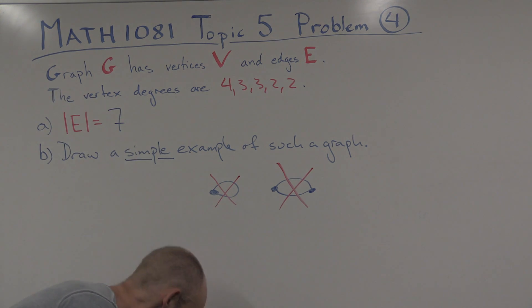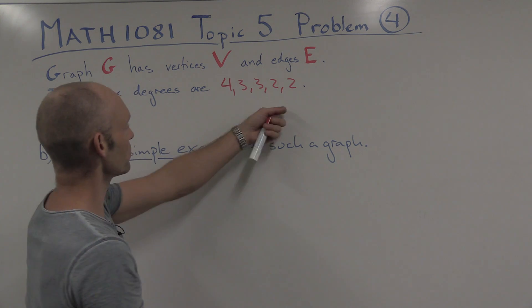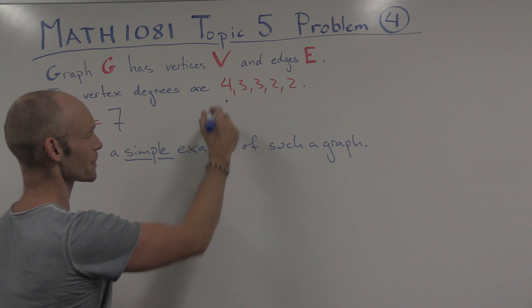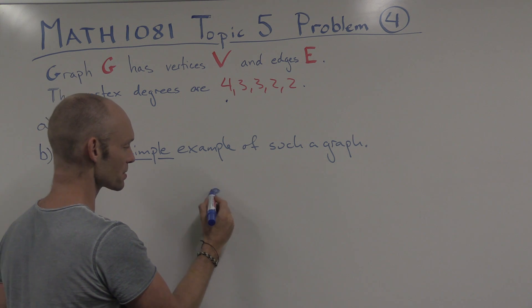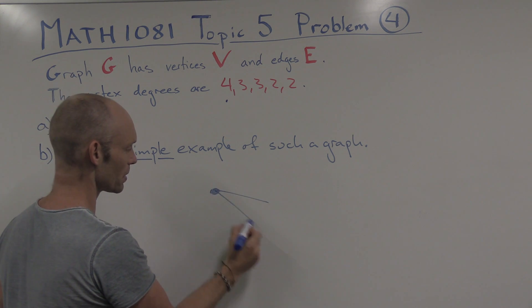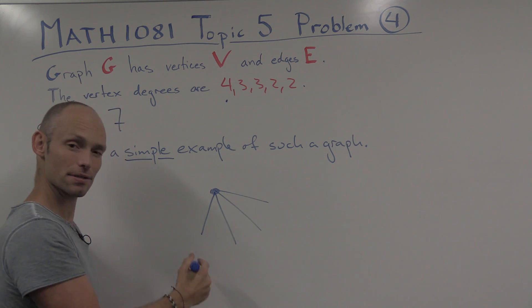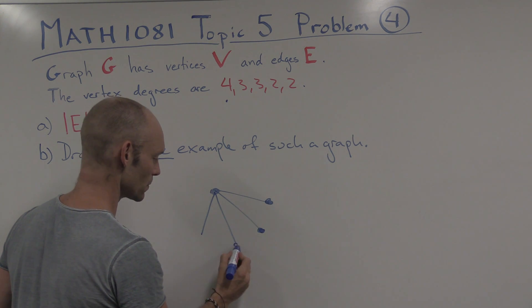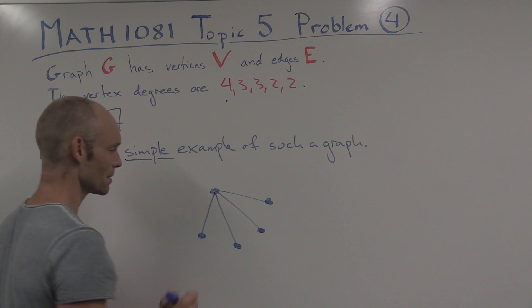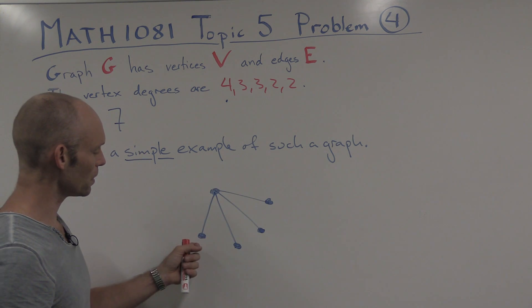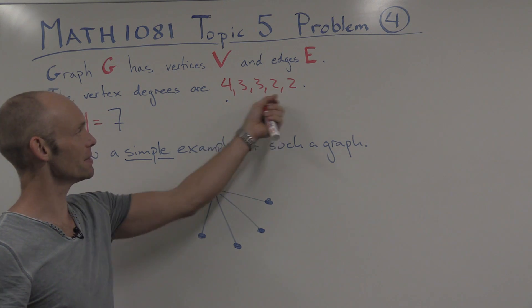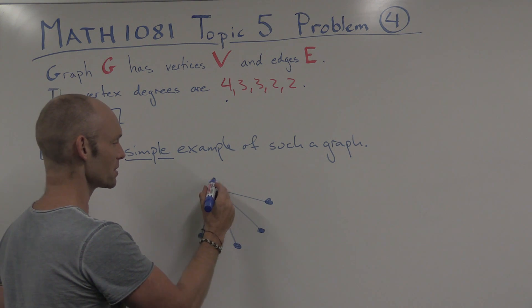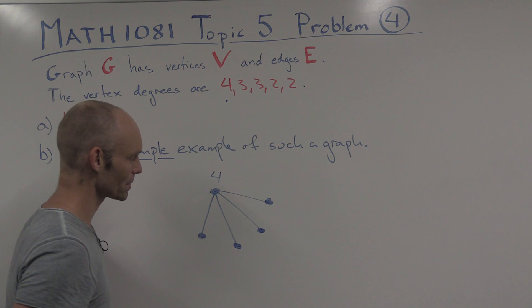So if we're trying to draw a graph with these vertex degrees, and it's a simple graph, then we can start off by taking this 4 here. So that 4 means that we have a vertex, let's draw it here, which is connected by 4 edges, and each of those edges ends in another vertex, like so. So now we've got 1, 2, 3, 4, 5 vertices. Ah, cool! Because that's exactly the number of vertices here. So we've drawn all the vertices. We've also drawn all of the edges going out from this vertex here with degree sequence 4.